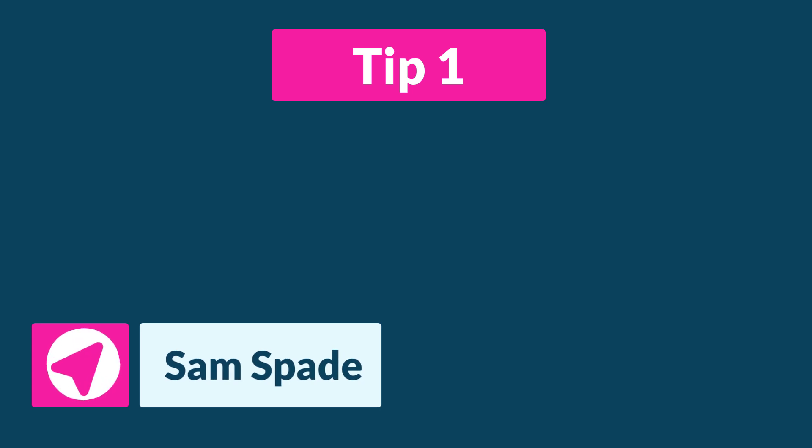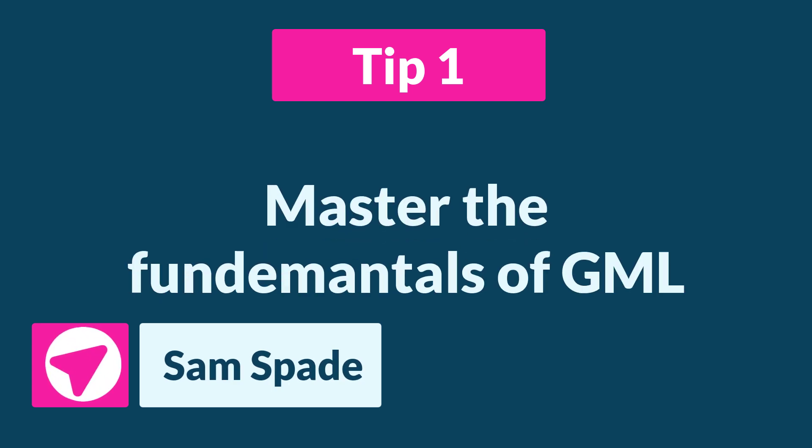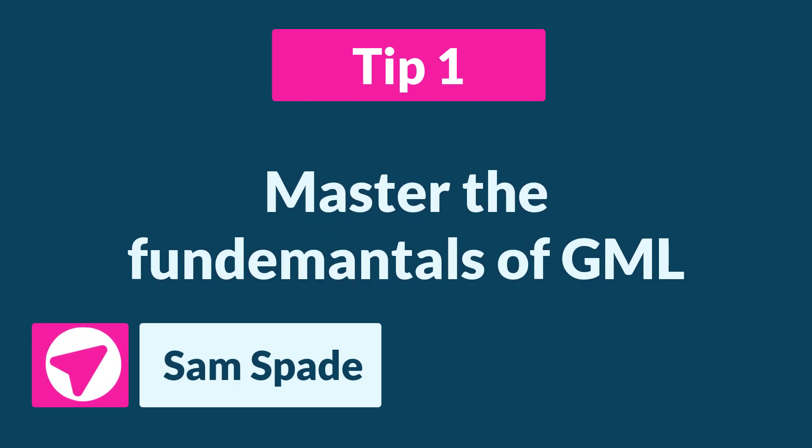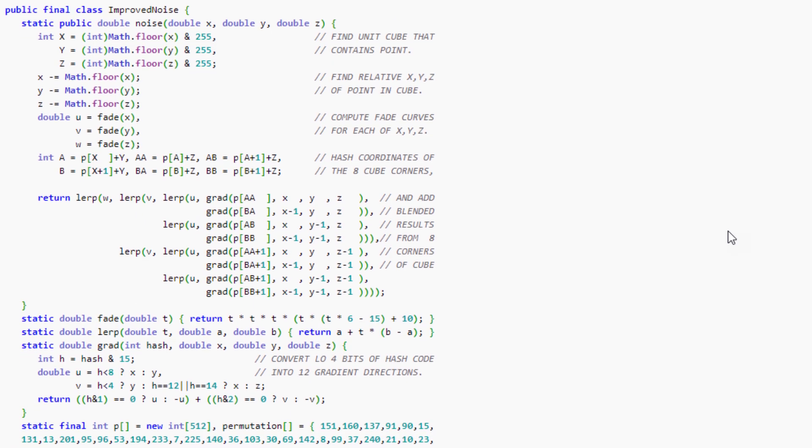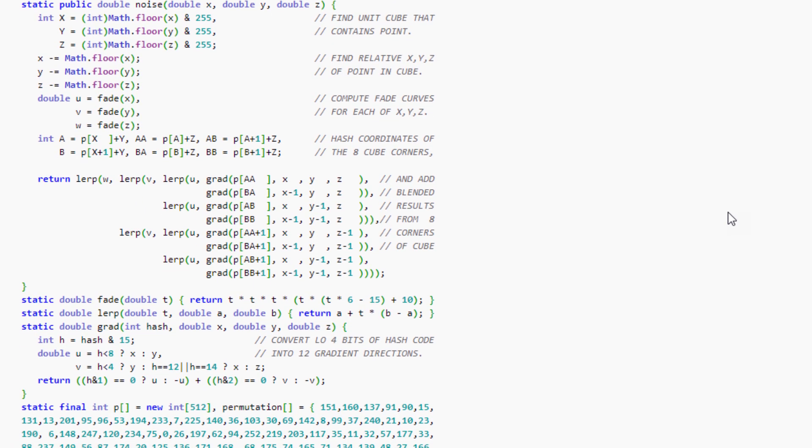To start with, and you may not like hearing this, the first thing you should do is master the fundamentals of GML itself. You don't need to be an expert or anything like that, but you need a solid understanding of how basic things like variables work, what data types exist, what data structures exist, how to write functions, and so on. For example, let's say you're looking at code in another language and you see words like int, float, double, etc.